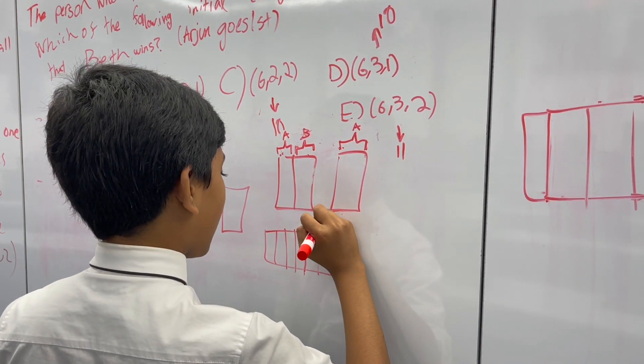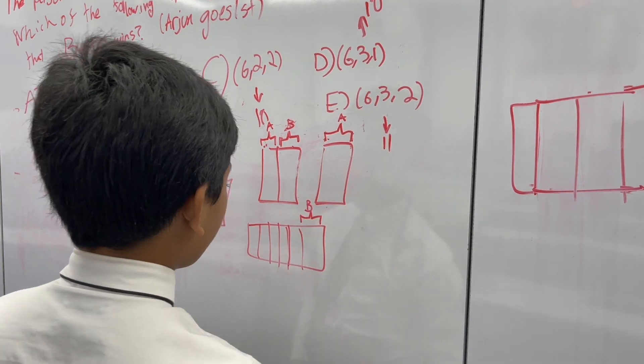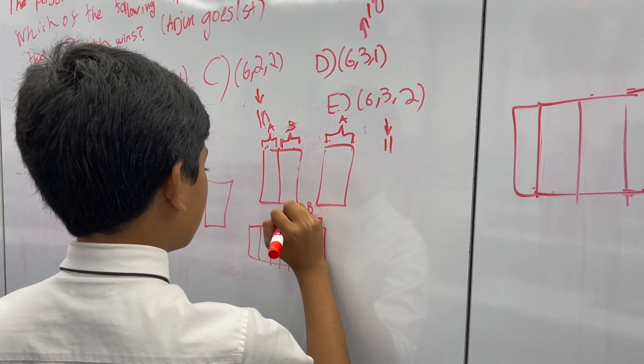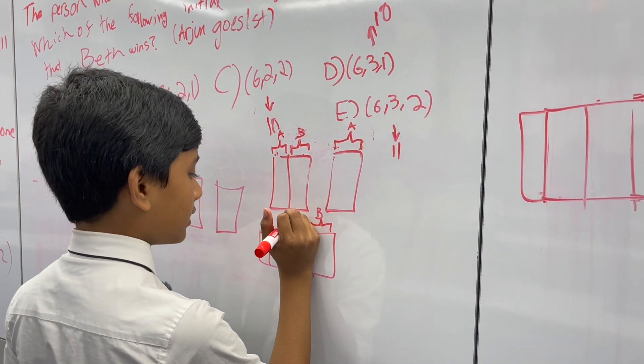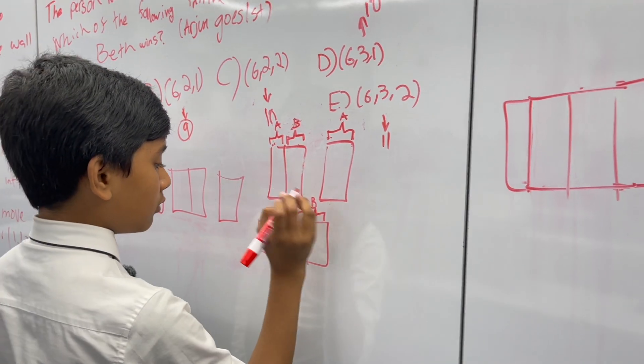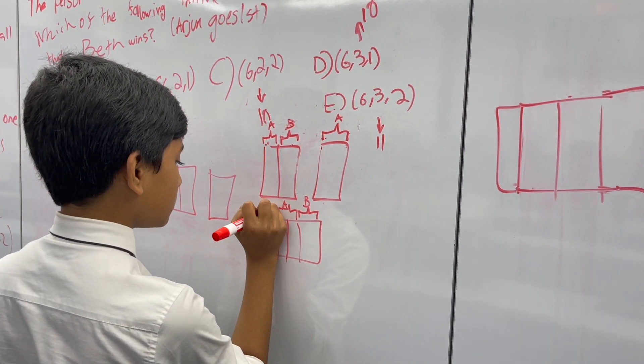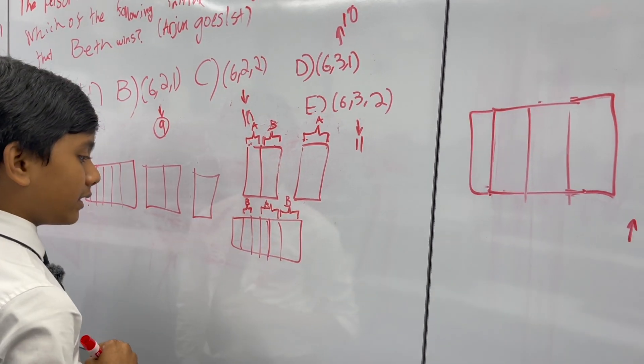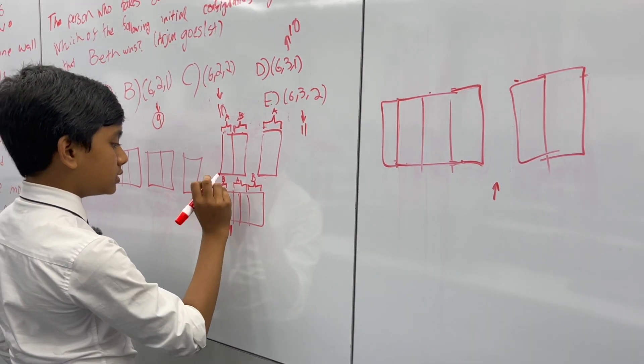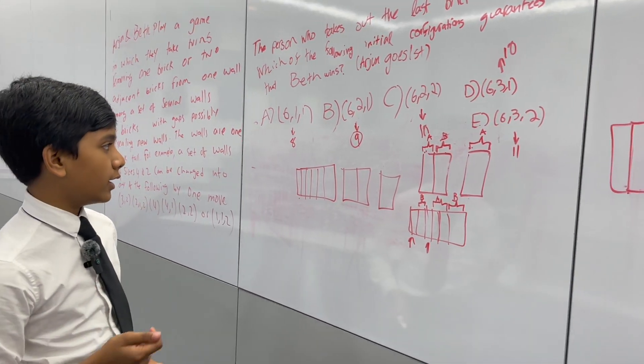Let's see what happens when Beth starts. If Beth takes out one, Arjun takes out two. Arjun tries to do Beth's little mirroring trick, but that doesn't work anymore, because what Beth can do, she can take out this little thing, and then Arjun has no hope, because whatever brick he chooses, Beth can choose the other brick, and she can win.